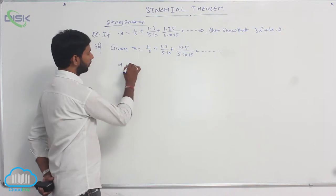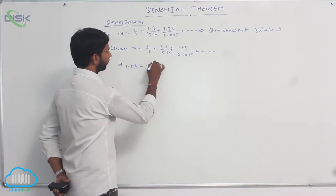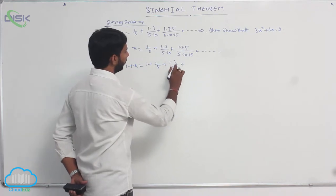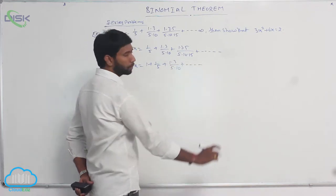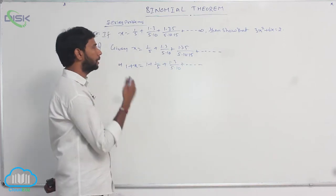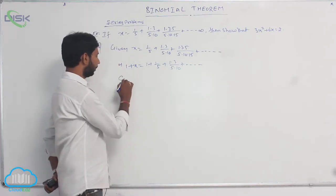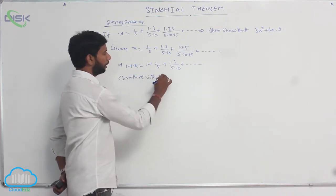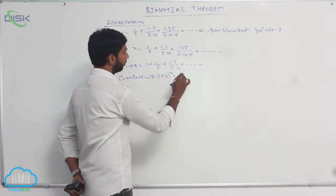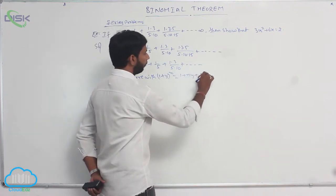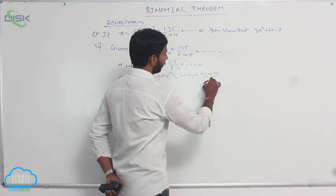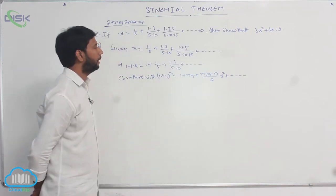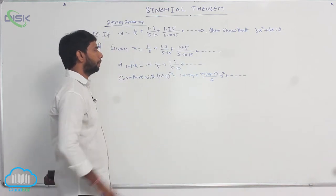Adding 1 on both sides: 1 + x = 1 + 1/5 + 1·3/(5·10) + and so on. Compare with the binomial expansion (1 + y)^n = 1 + ny + n(n−1)/2 · y² + and so on.